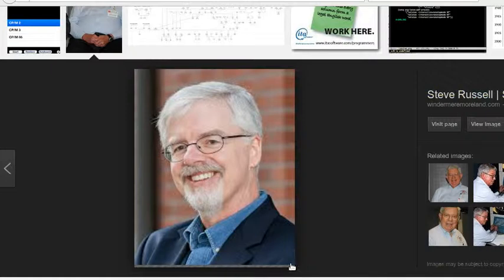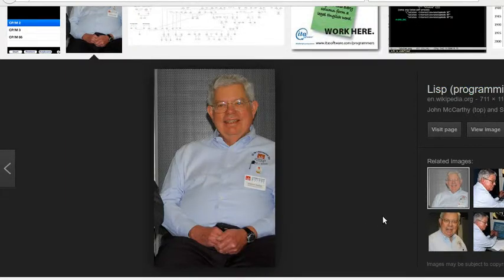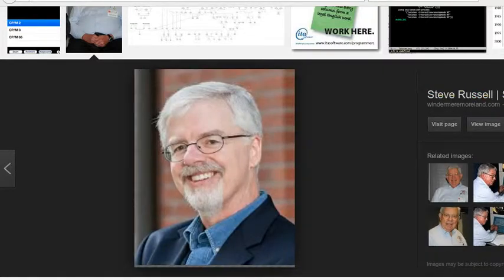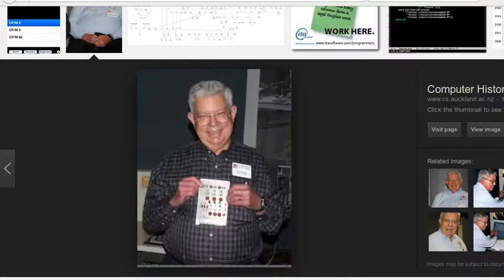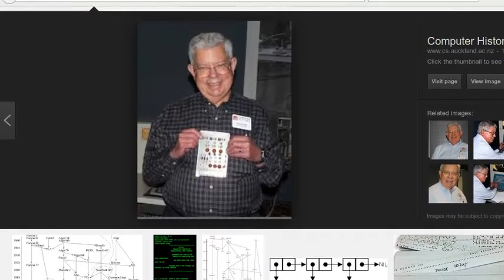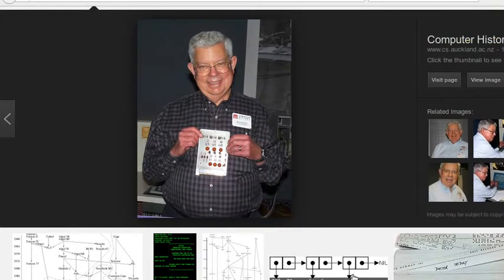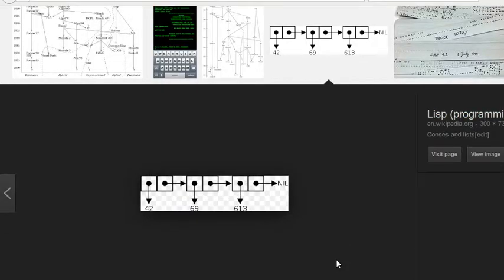The first complete LISP compiler written in LISP was implemented in 1962 by Tim Hart and Mike Levin at MIT. This compiler introduced the LISP model of incremental compilation, in which compiled and interpreted functions can be intermixed freely. The language used in Hart and Levin's memo is much closer to modern LISP style than McCarthy's early code.